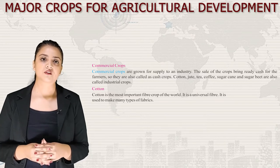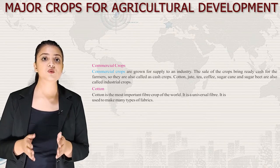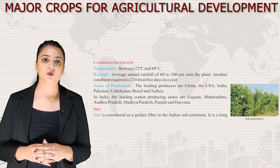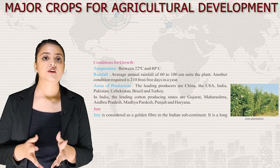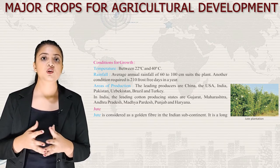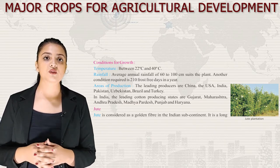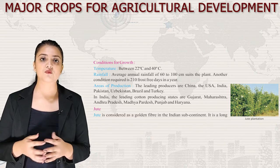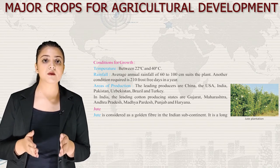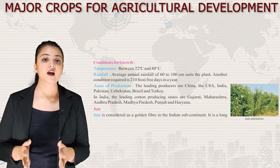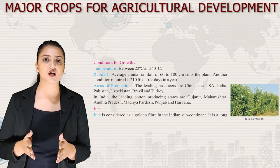First let's talk about cotton — the most important fiber crop of the world and a universal fiber used to make many types of fabrics. Conditions for growth: temperature 22°C to 40°C, average rainfall of 60 to 100 cm, and 210 frost-free days in a year. The leading producers are China, the USA, India, Pakistan, Uzbekistan, Brazil and Turkey. In India, the leading cotton producing states are Gujarat, Maharashtra, Andhra Pradesh, Madhya Pradesh, Punjab and Haryana.